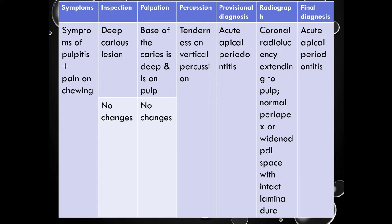Next, the patient may report with symptoms of pulpitis and, in addition, pain on chewing. On inspection, again deep caries lesion and no soft tissue changes. On palpation, base of the caries is deep and is on the pulp, with no soft tissue changes. But on percussion, there will be tenderness. Based on the clinical feature of tenderness on percussion, the diagnosis will be acute apical periodontitis. On radiograph, coronal radiolucency extending to the pulp and either normal periapex or widened PDL space with intact lamina dura. Final diagnosis: acute apical periodontitis.